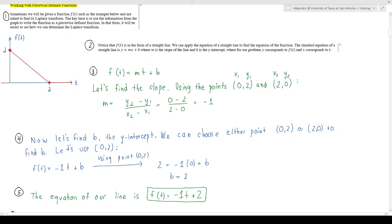We want to identify that f(t) is a form of a straight line so we can apply the equation of the straight line. We have f(t) is equal to mt plus b, that might look more familiar as y equals mx plus b where m is the slope and b is the y-intercept.